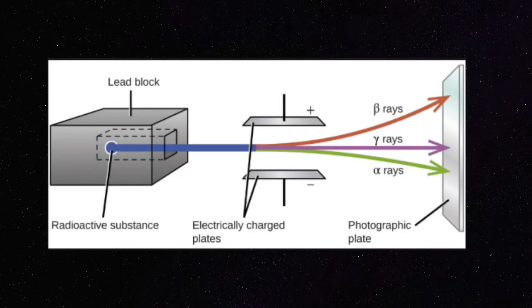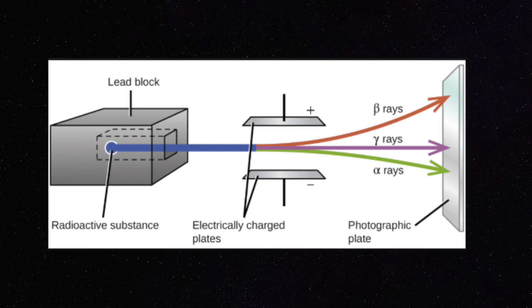If you look at the diagram, you have the radioactive substance inside a lead block and the electrically charged plates. The radiation is composed of beta rays, gamma rays, and alpha rays. Beta rays are composed of electrons, alpha rays are composed of protons, and they're attracted to the oppositely charged plates. Gamma rays are neutral, so they pass straight across.